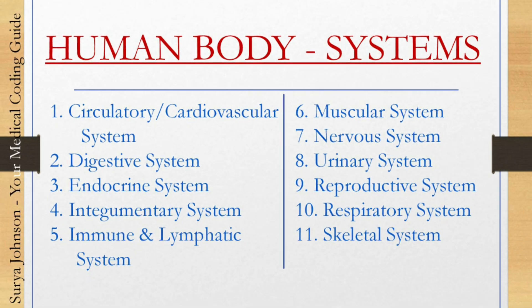In my last video, part 1 of stem or root words in medical terminology, we saw the circulatory or cardiovascular system, digestive system, integumentary system, muscular system, and respiratory system. In today's part 2 video, we'll cover the remaining six human body systems.